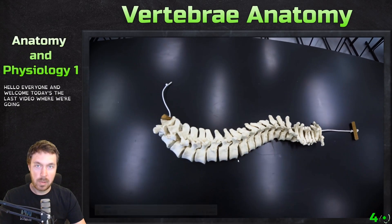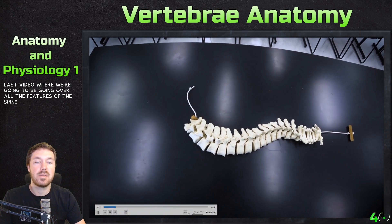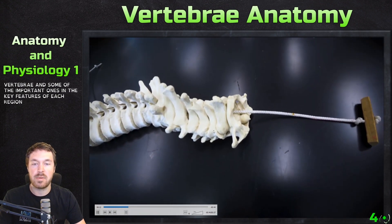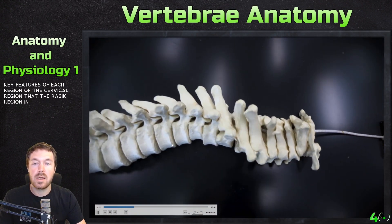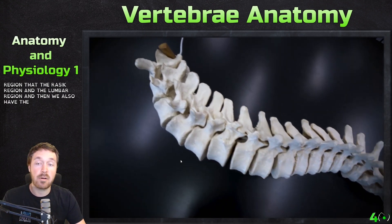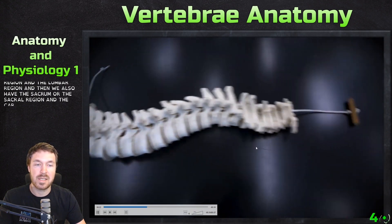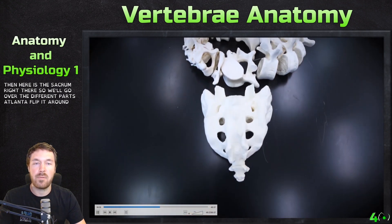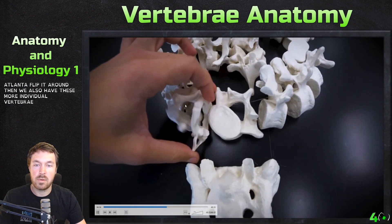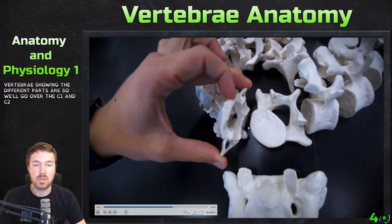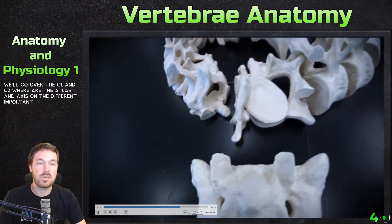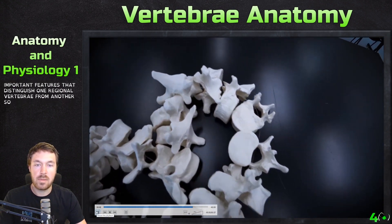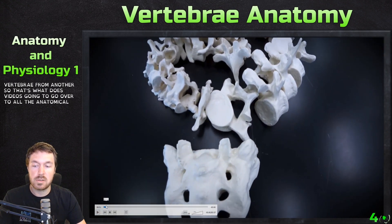Hello everyone and welcome to today's lab video where we're going to be going over all the features of the spine and the different intricacies of each vertebrae — some of the important ones and the key features of each region. So we have the cervical region, the thoracic region, the lumbar region, and then we also have the sacrum or the sacral region and the coccyx as well. We'll go over the C1 and C2, or the atlas and the axis, and the different important features of each and some of the important features that distinguish one regional vertebrae from another.